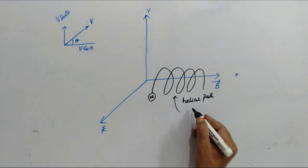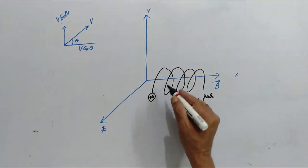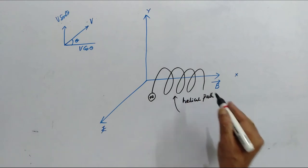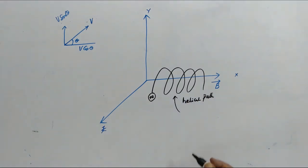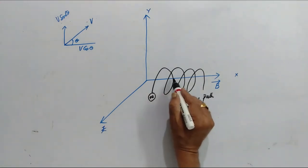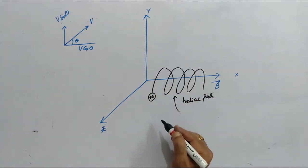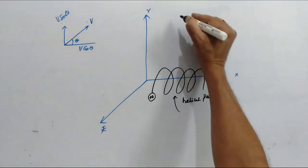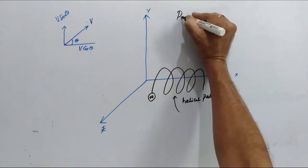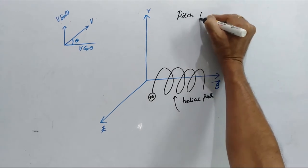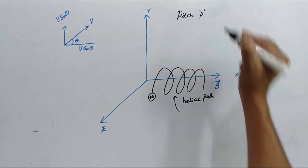That is, it moves in a circular path. At the same time, it will be advanced along the direction of magnetic field. The distance covered along the direction of the magnetic field in one complete rotation is called pitch. Pitch is represented by P.